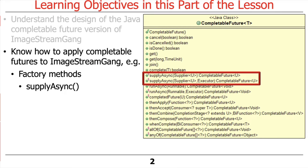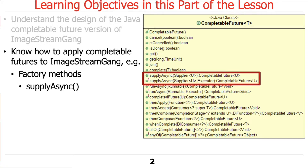A factory method is the mechanism in Java completable futures that can be used to start asynchronous processing. And the most common way of doing that, as we've talked about before, is supplyAsync.